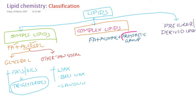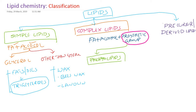Depending upon this prosthetic group, complex lipids are subclassified into three types. If the additional group is phosphoric acid, we call them phospholipids. If the additional group is carbohydrate or sugar, we call them glycolipids. And if the additional group is protein, we call them lipoproteins.